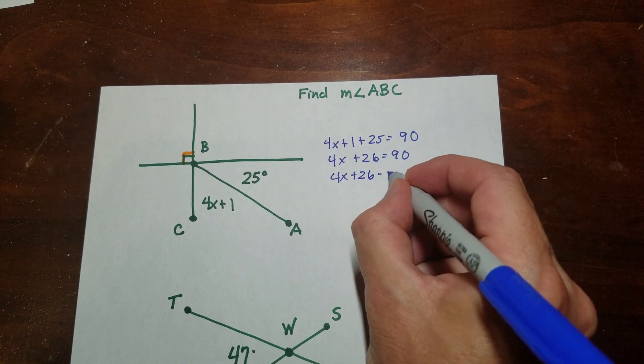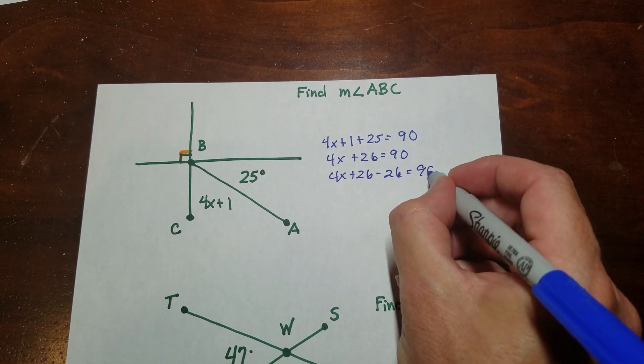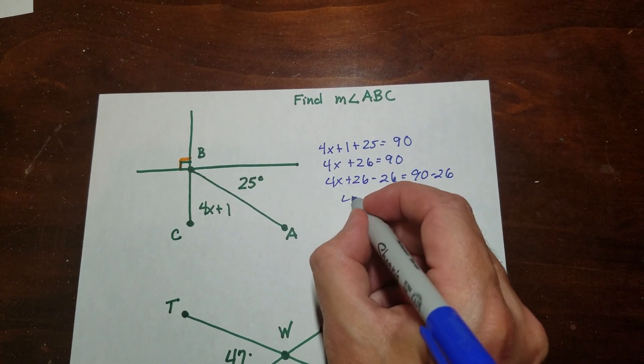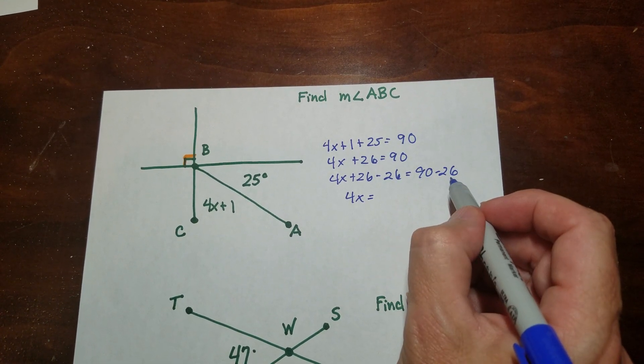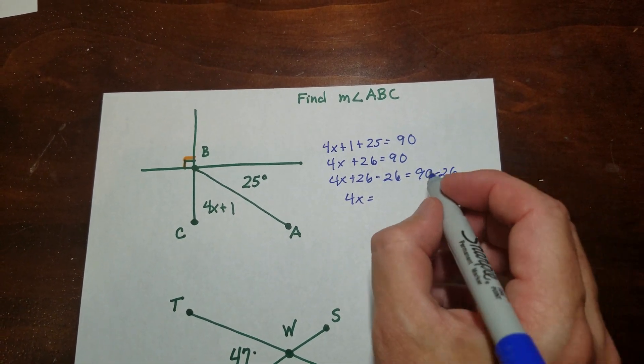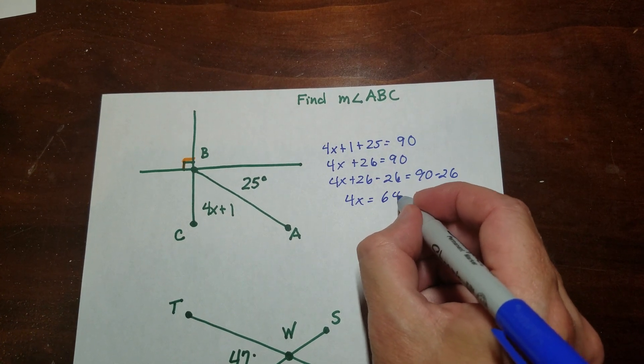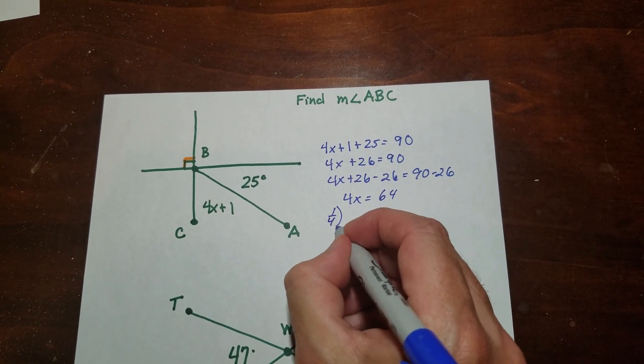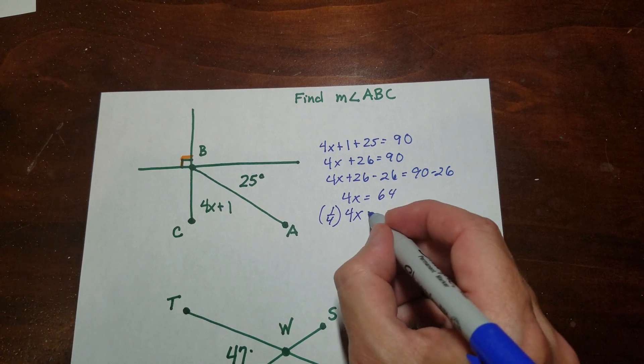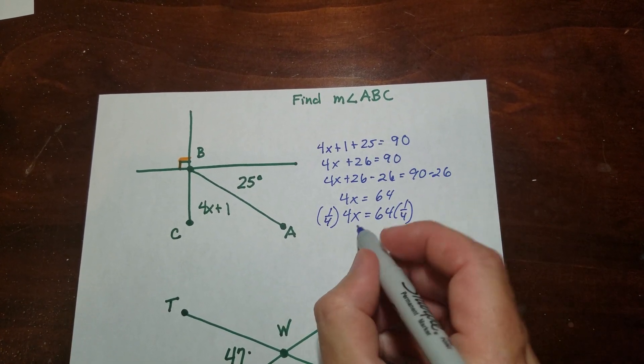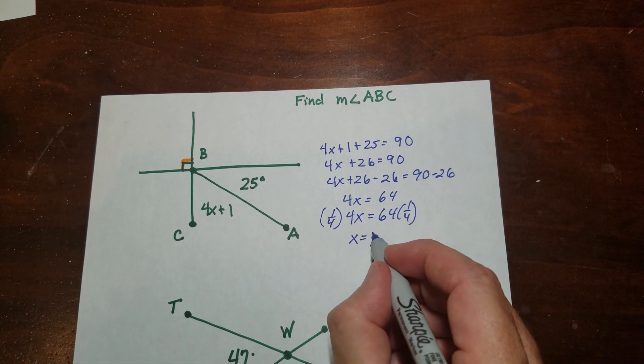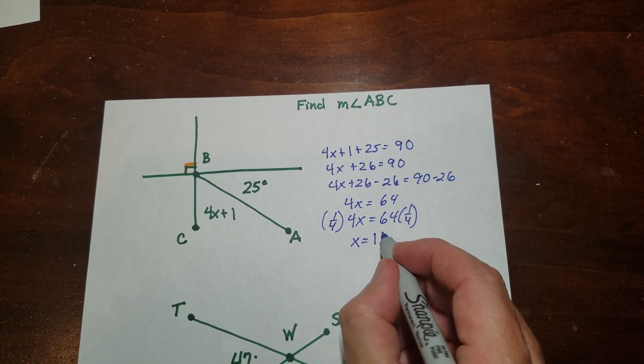Add up those two things. Subtraction property of equality. And if I take away 20, I'm at 70, and six more would be 64. Multiplicative inverse or division property of equality, whatever you want to call it. And that comes to 16, I think. Yep.